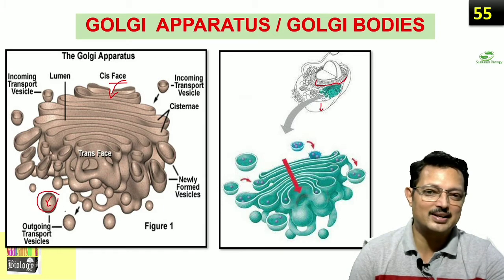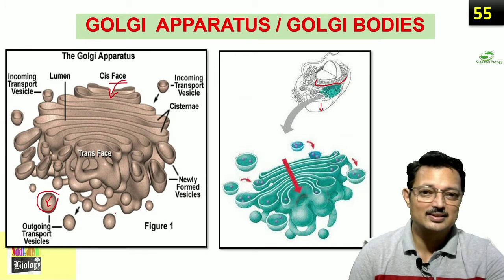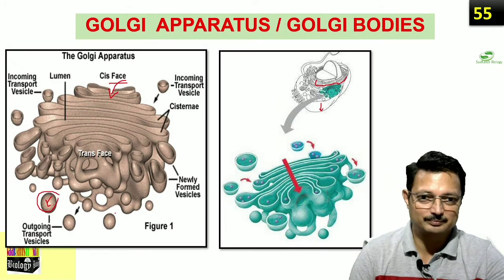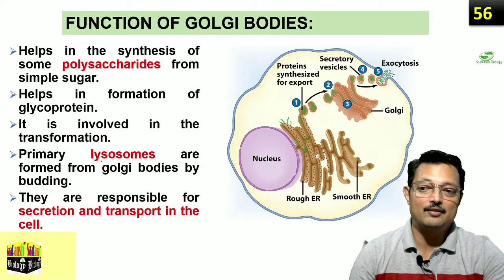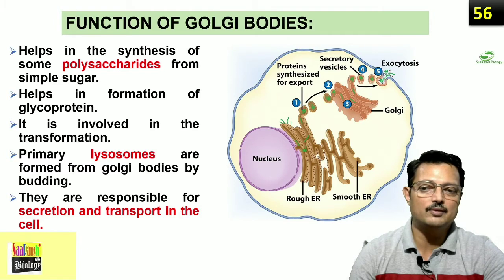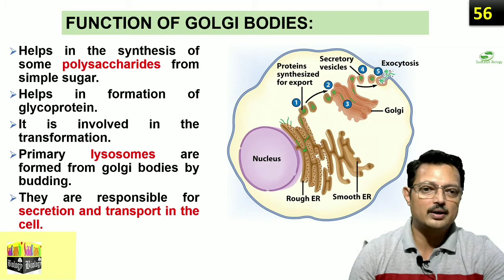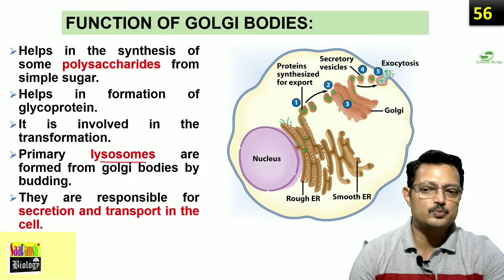You can take an example of a small factory — maybe a papad industry. It receives the raw material, converts it into papad, packs it, and then delivers it to the market. Golgi bodies help in synthesis of polysaccharides, forming complex molecules from simpler sugars. They help in the formation of glycoproteins and are involved in transformation. Golgi bodies also form lysosomes and are responsible for secretion and transportation inside the cell.